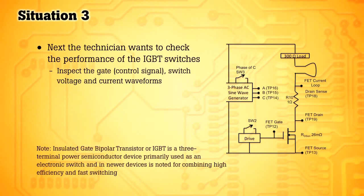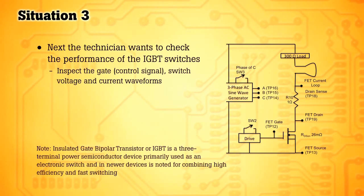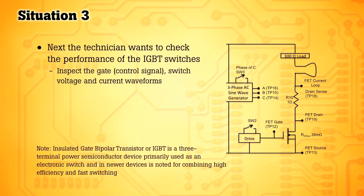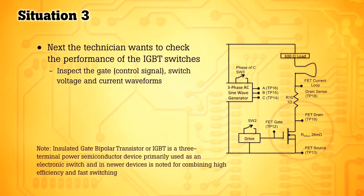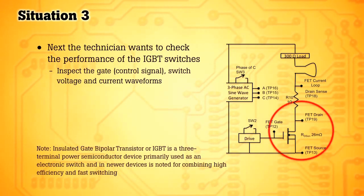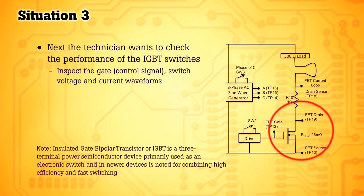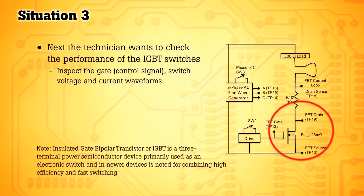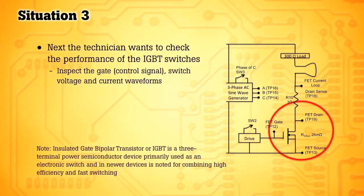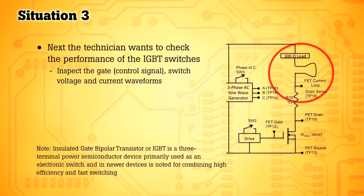So to inspect the switch, we're going to use the three input channels of the Scopemeter 190 Series 2 4-channel oscilloscope. The first channel will be looking at the switch control or drive signal. The second channel will look at the voltage output from the switch, and the third channel will look at the current through the circuit or the current through the circuit to the load.